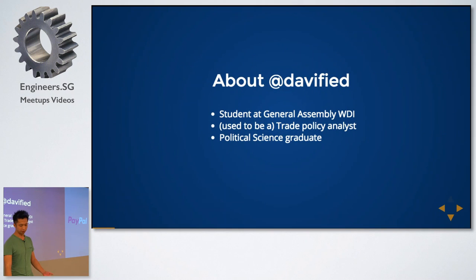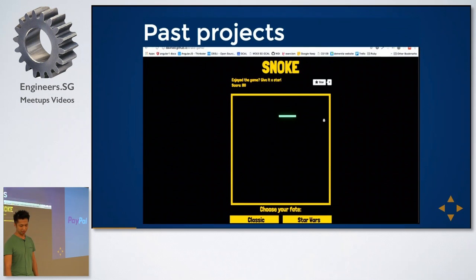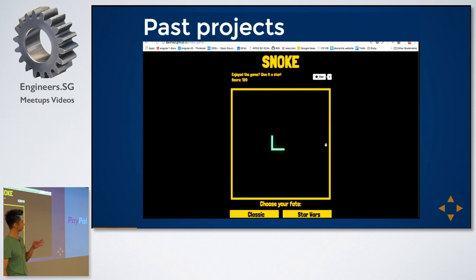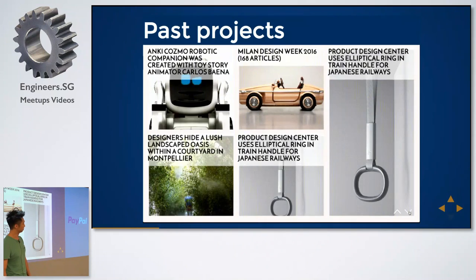Just very quickly about me. I'm a GA student. I used to be a trade policy analyst, which means I had a really boring job — that's why I switched to GA. I'm a policy science graduate. Some projects I've done include a snake game like the Nokia 3310, and some web design stuff.